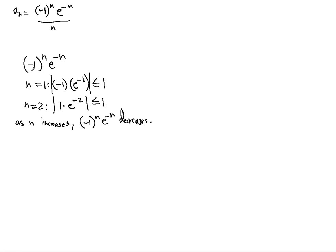The reason we use the absolute value is that negative 1 raised to the nth power produces alternating signs — positive, negative, positive, negative — but the absolute value of any such result will always be less than or equal to 1. So the absolute value of the numerator decreases as n increases and will never be greater than 1.